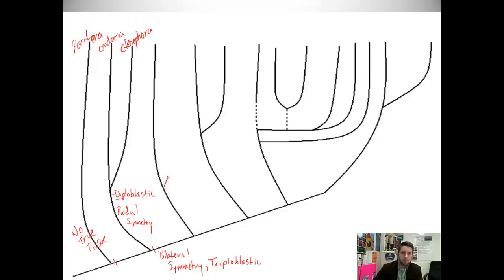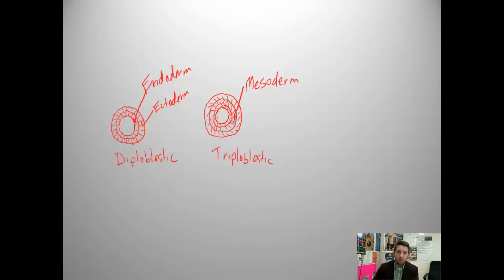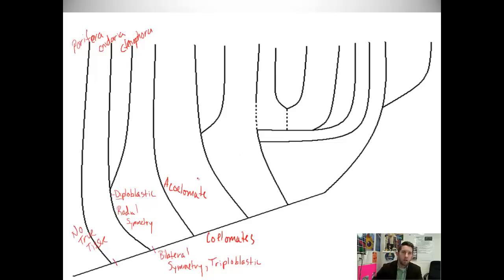Organisms that branch off here are called acoelomates because they don't have a coelom. These do have one. They are coelomates. What's a coelom? Well, if you think about our body structure, the inside of our body, we encapsulate our organs. We kind of have like a bag on the inside of our body in which all of our organs are. That bag or that cavity is our coelom, our internal body cavity. If you don't have one, you're an acoelomate. If you do, you're a coelomate. Now, the mesoderm, as we saw here, that's what turns into your coelom. The mesoderm, the coelom is mesodermal in origin. So the mesoderm becomes the coelom. The acoelomates continue on. What are acoelomates? Well, the flatworms. Platyhelminthes. Platyhelminthes are the flatworms. They are acoelomates.